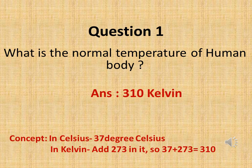Let us begin with the first question: what is the normal temperature of the human body? The answer is 310 Kelvin on the Kelvin scale. In Celsius scale it is 37 degrees Celsius. The formula to convert Celsius to Kelvin is to add 273 to the Celsius temperature — so 37 plus 273 equals 310 Kelvin.